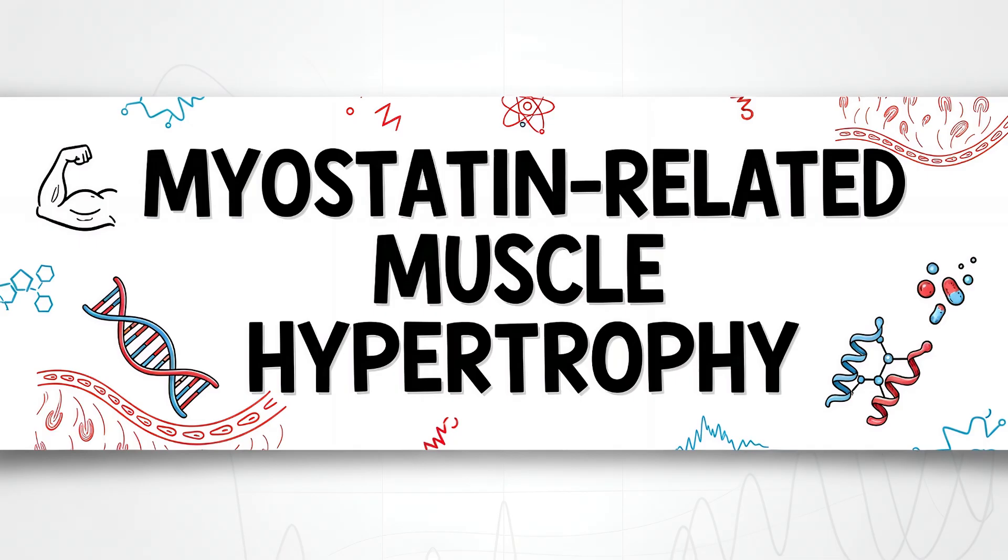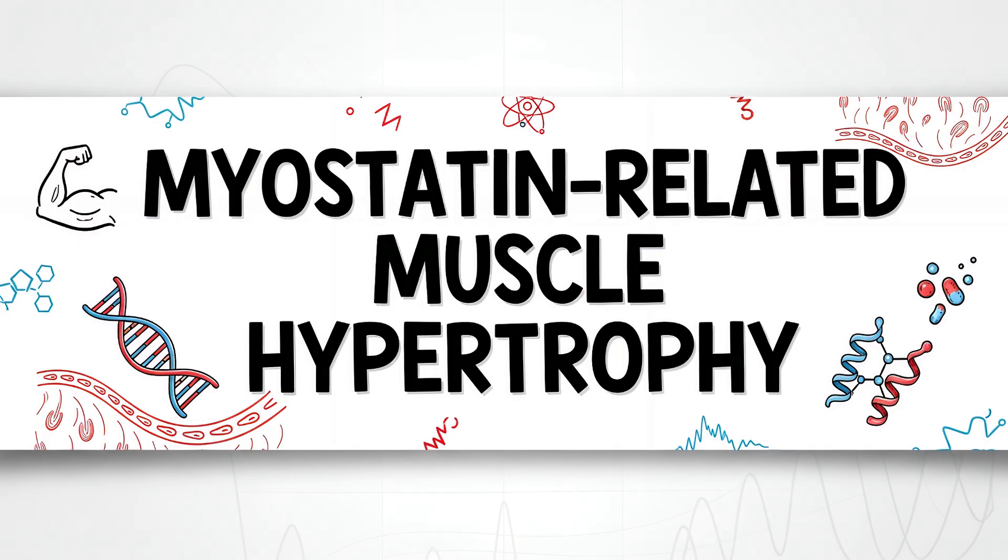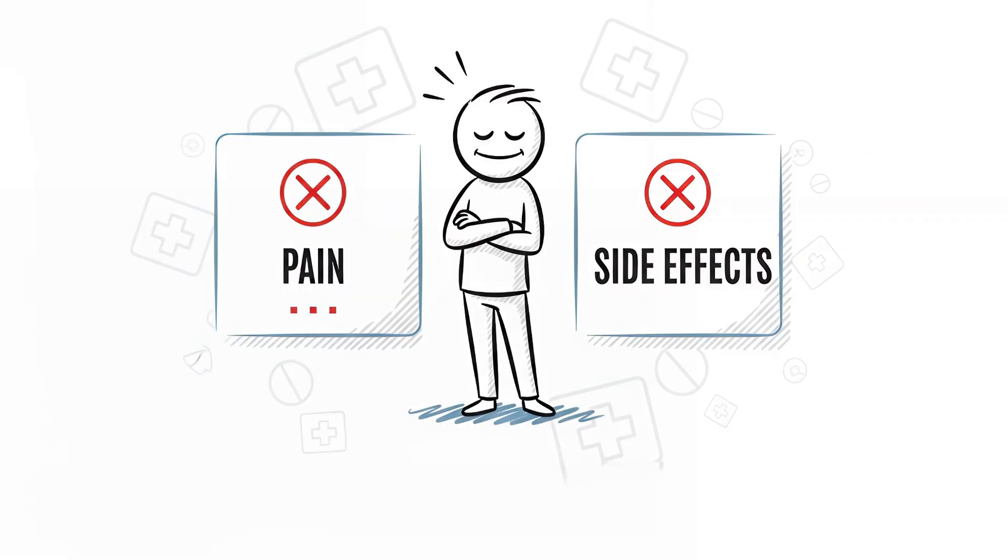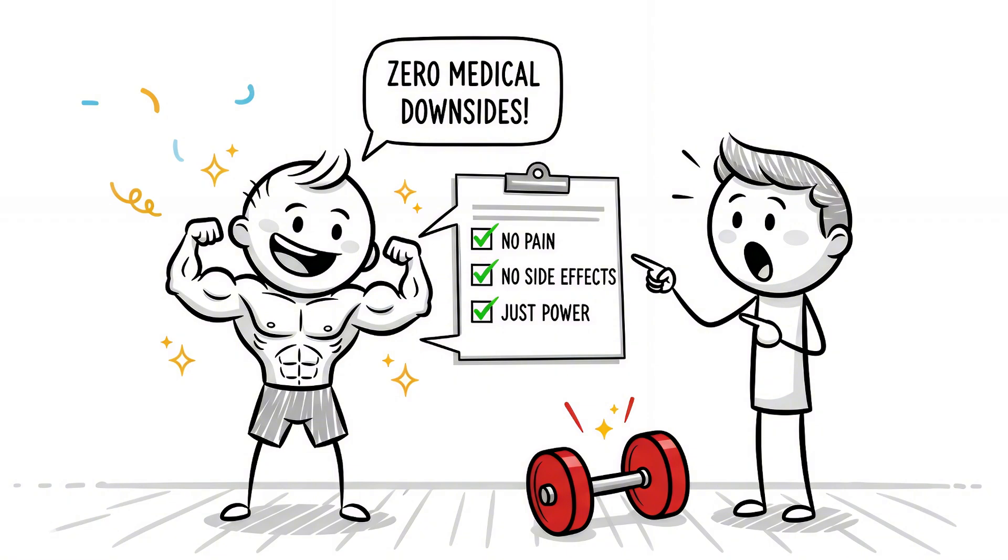Liam has myostatin-related muscle hypertrophy. His body forgot how to make the stop-growing protein result. Muscles that never hit the brakes, nearly double the muscle mass, almost zero body fat. It's the only mutation on this list with zero medical downsides. No pain, no side effects, just raw power.